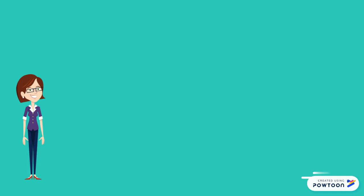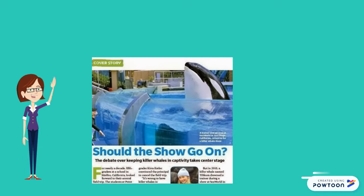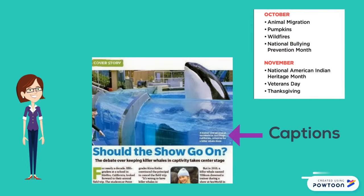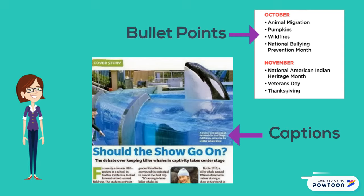If you're reading an article with pictures in it, you might notice the little words. These are called captions and they tell the reader what's happening in the picture. Next, you'll see bullet points. The bullet points are small little dots and the author uses these to list information out.